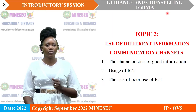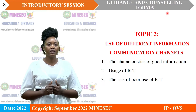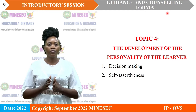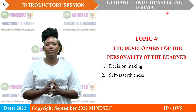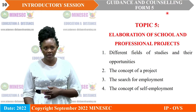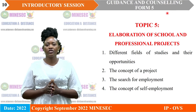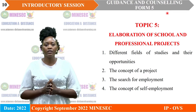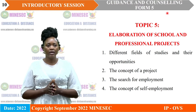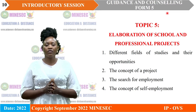Under topic three we have subtopics: the characteristics of good information, usage of ICT, and the risks of poor use of ICT. Topic four, titled the development of the personality of the learner, has two major subtopics: decision making and self-assertiveness. Topic five, elaboration of school and professional projects, has five main subtopics: the different fields of studies and their opportunities, the concept of a project, the search for employment, and the concept of self-employment.